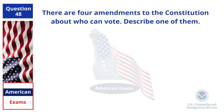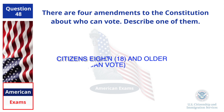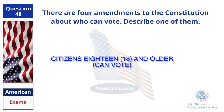There are four amendments to the Constitution about who can vote. Describe one of them. Citizens 18 and older can vote.